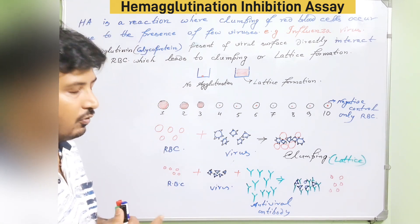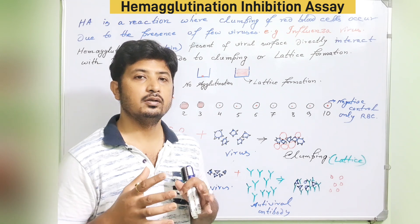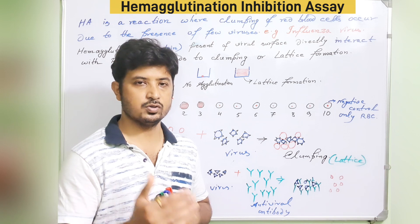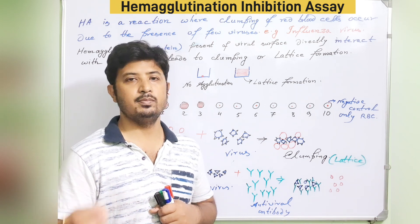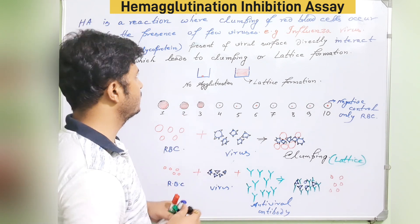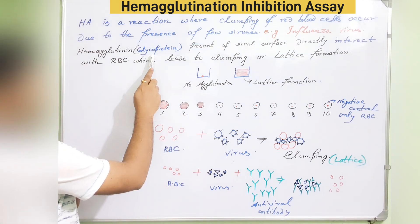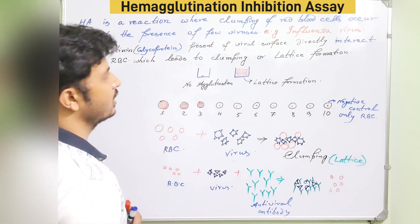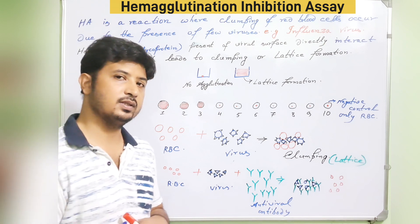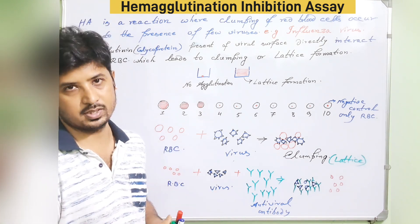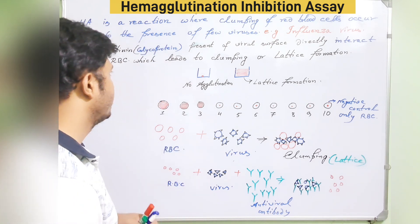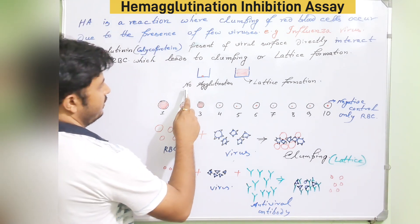That lattice structure gives you a definitive result to identify whether the reaction is hemagglutination positive or negative. The virus's hemagglutinin glycoprotein, present on the viral surface, interacts with RBCs and leads to clumping and lattice formation — that is the agglutination process.